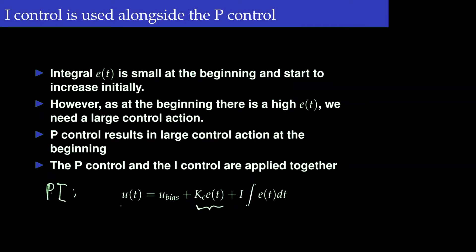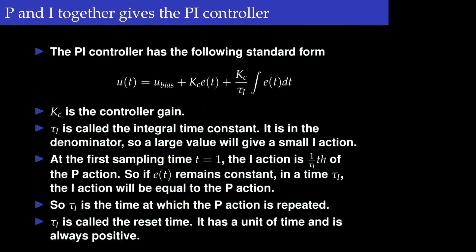For the PI controller, the control action is the bias term plus the proportional term plus the integral term. The integral part is represented by kc over tau_i. Here kc is called the controller gain, and tau_i is called the integral time constant — it appears in the denominator, so a large tau_i means a smaller integral action.